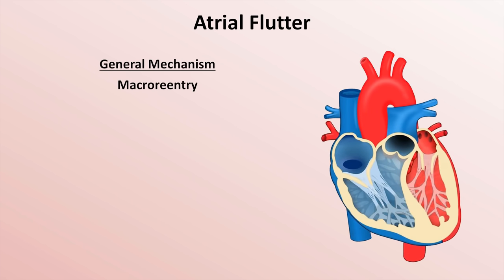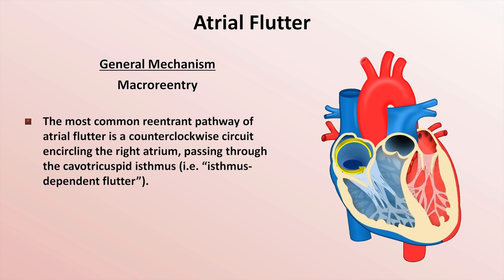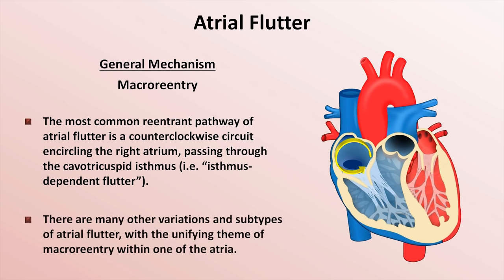Atrial flutter is also a re-entrant rhythm. The most common re-entrant pathway is a macroscopic counter-clockwise circuit encircling the right atrium, passing through the cavo-tricuspid isthmus, making this form isthmus-dependent flutter. There are many other subtypes, all sharing the theme of macro re-entry within one of the atria. Knowledge of the mechanism is not critical to diagnosing the rhythm from EKG.